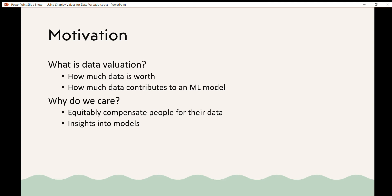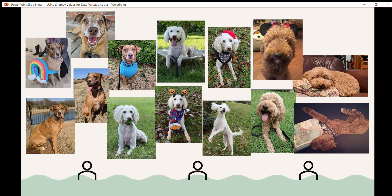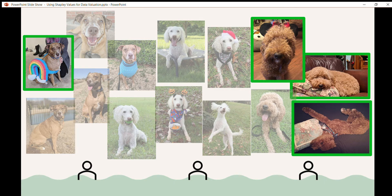So I want to look at a quick example of this. Let's say that we are building an object detector and we're crowdsourcing some data, and these three individuals are contributing pictures of their dogs. Maybe we run a data valuation method and these four pictures are given data values that are really high. So maybe we look at those high value pictures and we notice that they're all dogs that are inside.